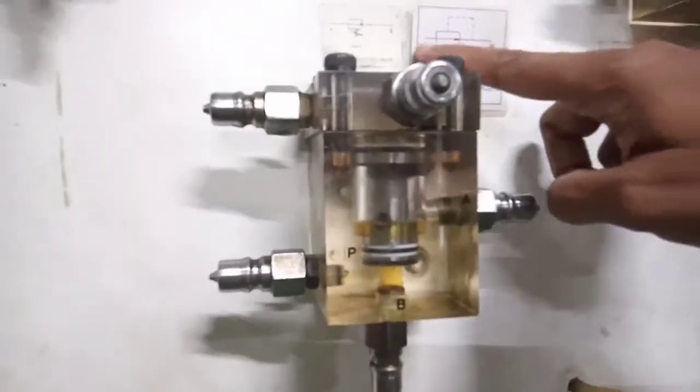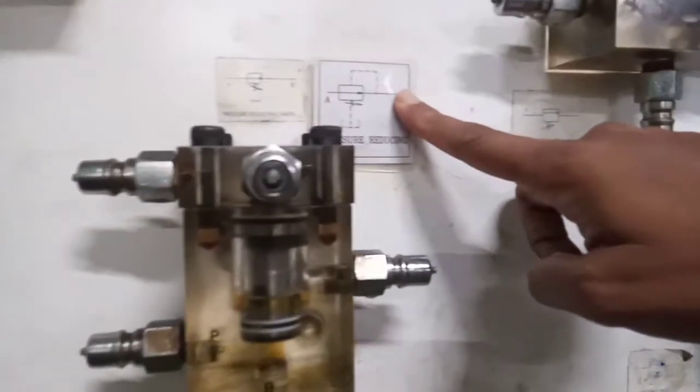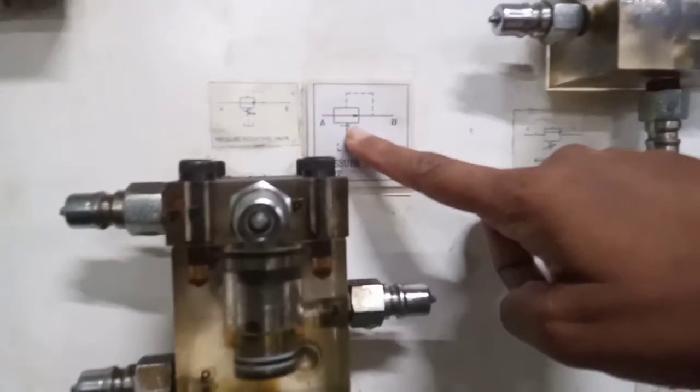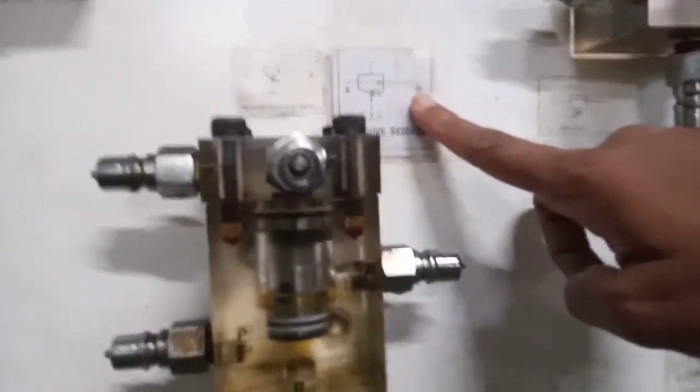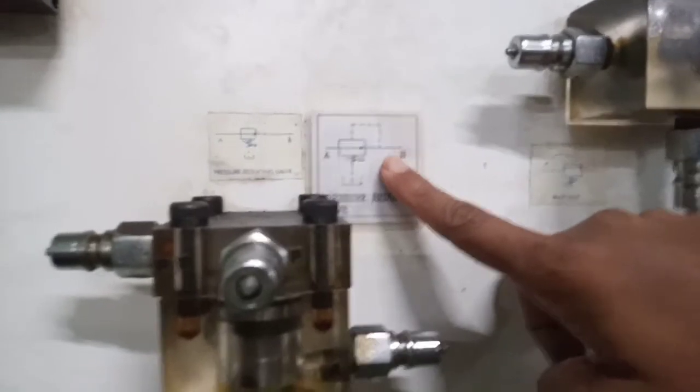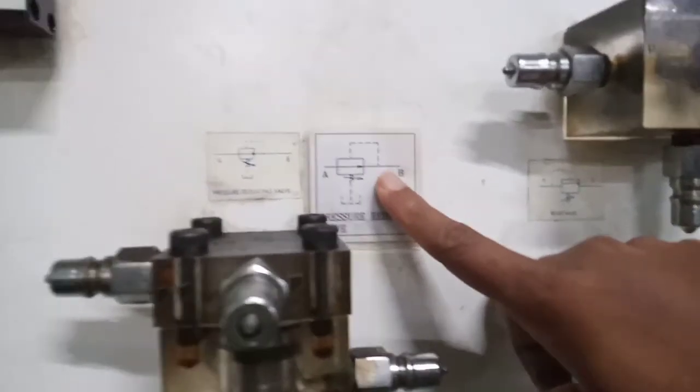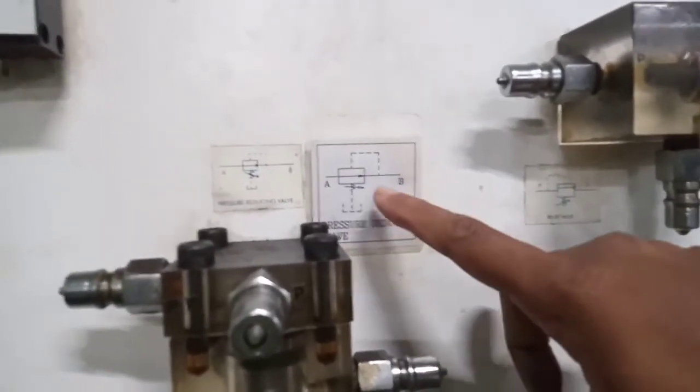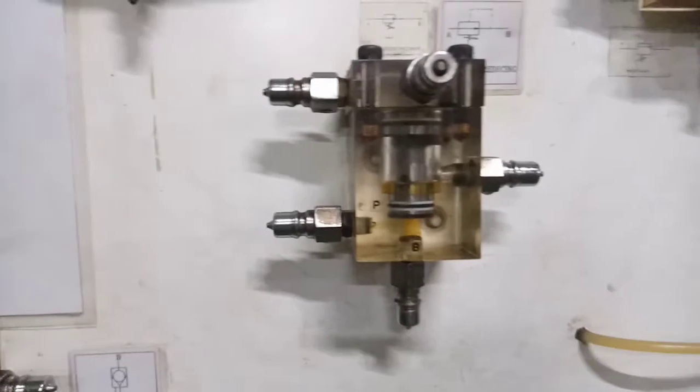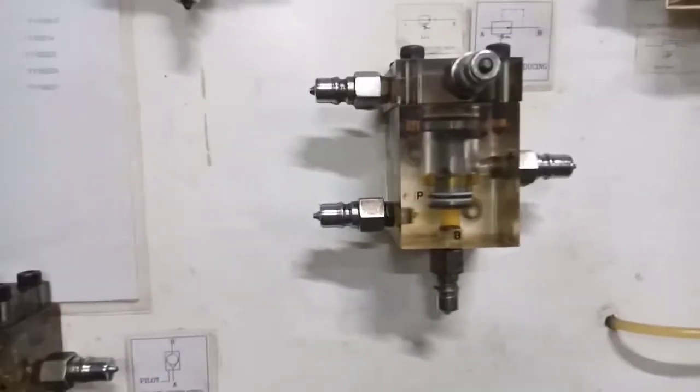So, A to B is the supply and here the pressure is adjusted as per our requirement in this port. Pressure requirement. So, feedback is taken from the outlet. It is internal feedback from but from outlet. So, that we can adjust and that much pressure will be going to port B. So, this is how this pressure reducing valve looks like.